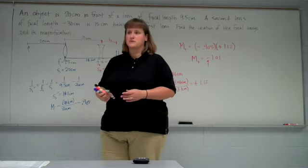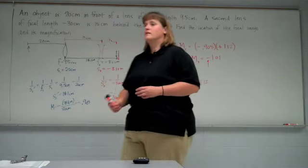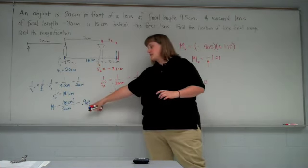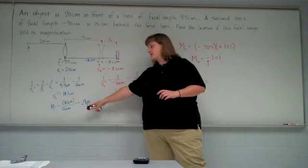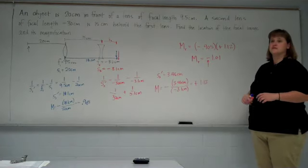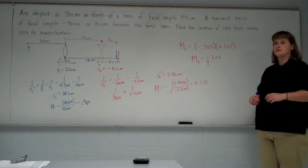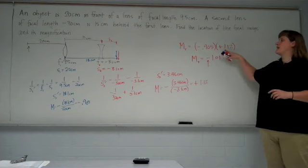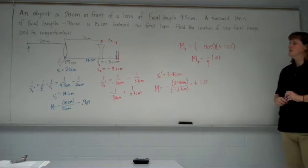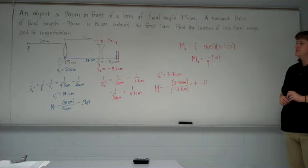So why is that negative? Why is what negative? This? Yeah, total negative. Because we're multiplying the original, the first magnification, which was negative, by the second magnification, which is positive. I thought we were adding it. No, we didn't add it. It mathematically came out to be negative.